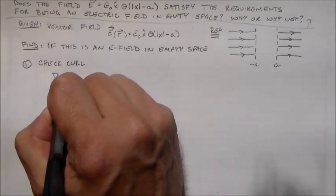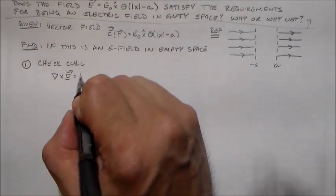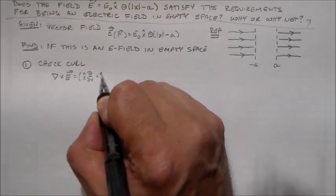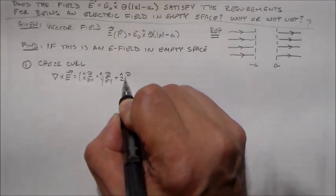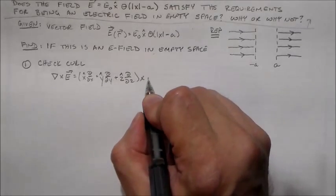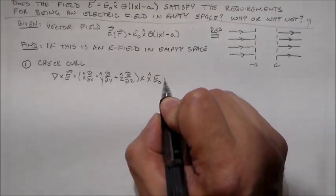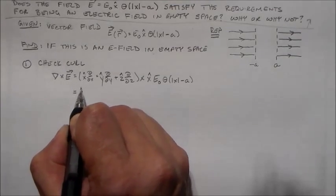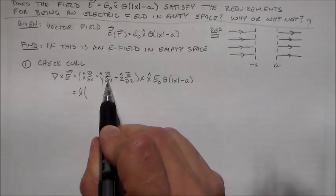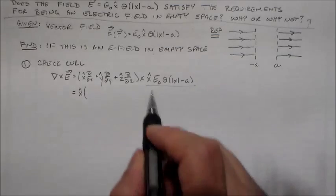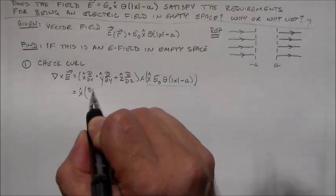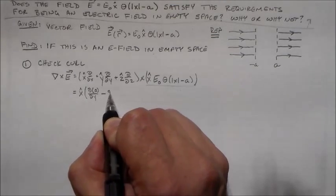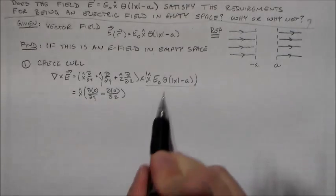And remember the curl is just del cross E. Which in this case is x hat d/dx plus y hat d/dy plus z hat d/dz. And I take the cross product of that with this field here, which is x hat e0 theta of x minus a. So how do we want to take the curl this time? It's all the same thing. It's just how I feel like going through the motions. So let's just start with x this way.